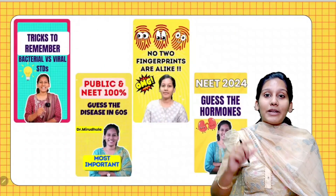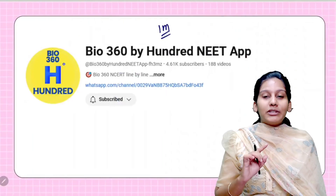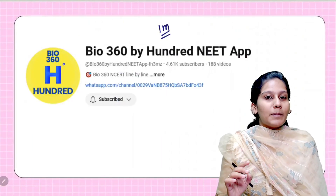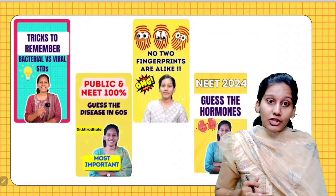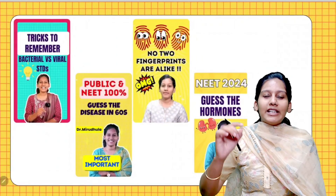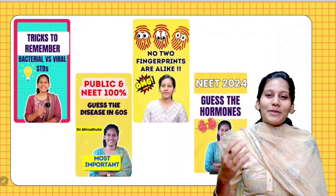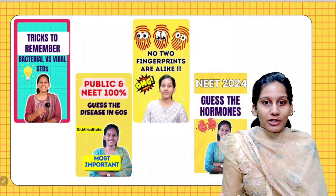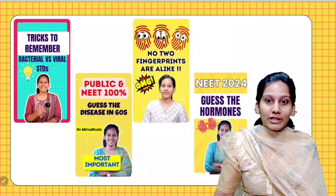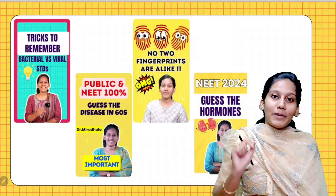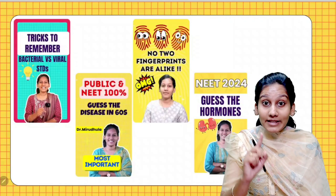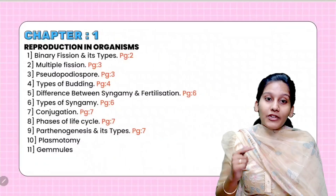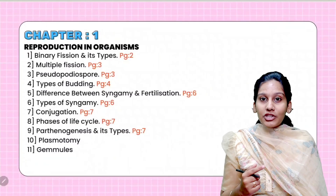Here is the channel for you: Bio 360. You will get to the search and get to the show. You can get all these tricks — for example, genetics — it will be easy to do a one-minute revision or recall. Go through these shorts; it will be very helpful.